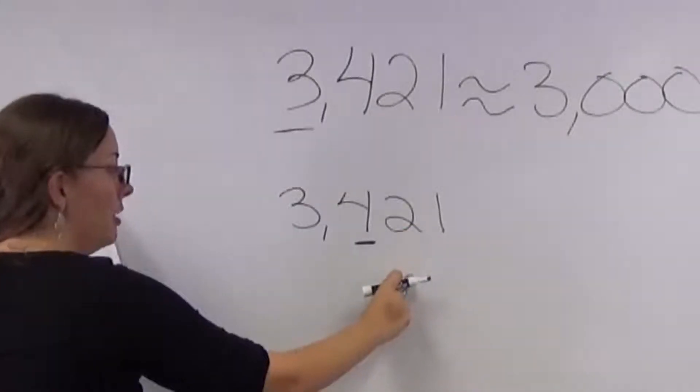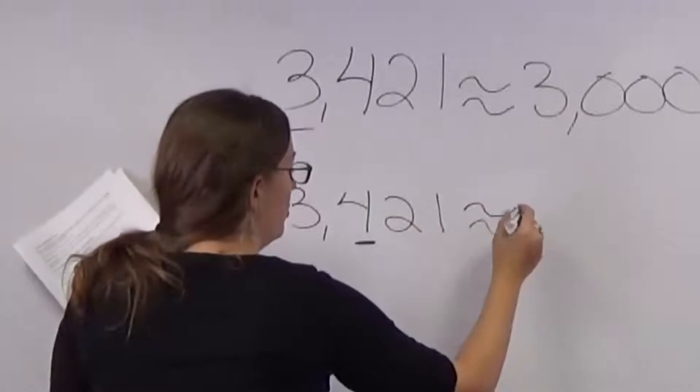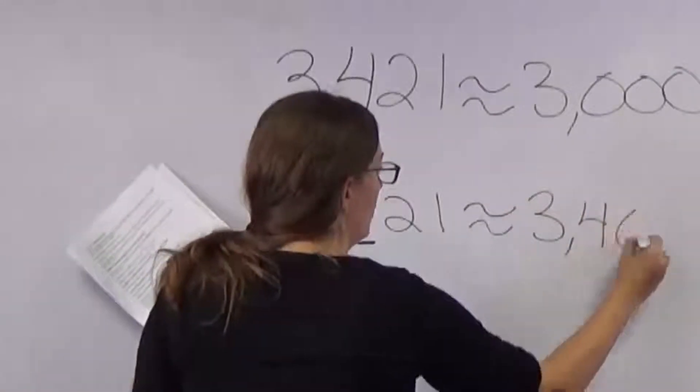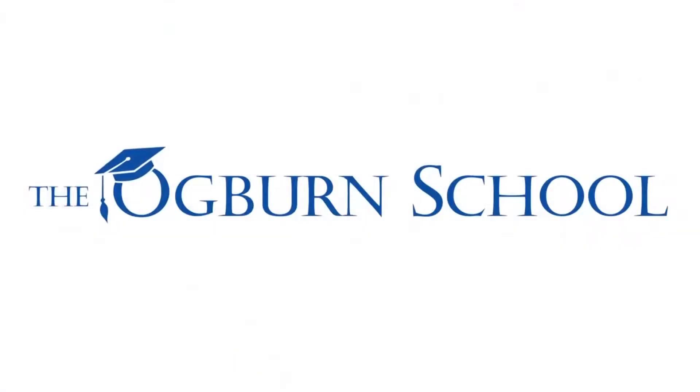and that is a four or below. So this number would stay the same and everything would turn to zeros behind that. So if we were rounding to the nearest hundreds place, we would have three thousand four hundred.